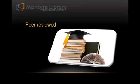Scholarly journals that contain empirical articles are usually peer-reviewed or refereed. This means that the articles undergo a review process by a board of experts in the field — peers — before they can be published. This board serves to ensure that the research is sound and that the article is a valuable contribution to the body of knowledge in a particular field.